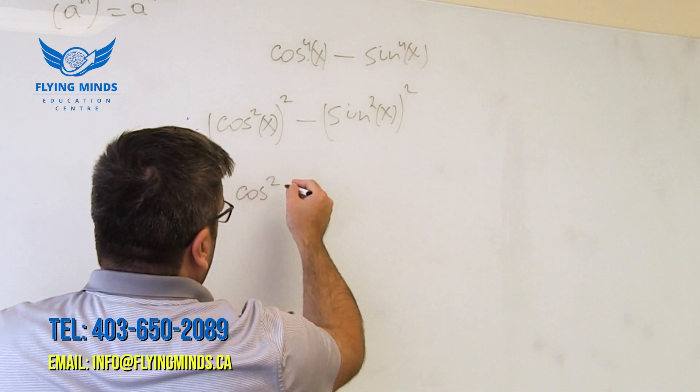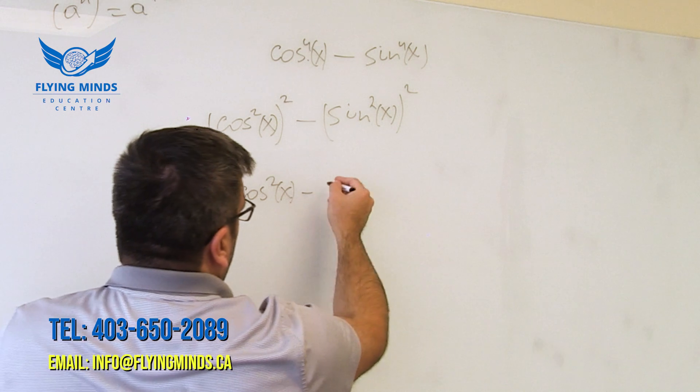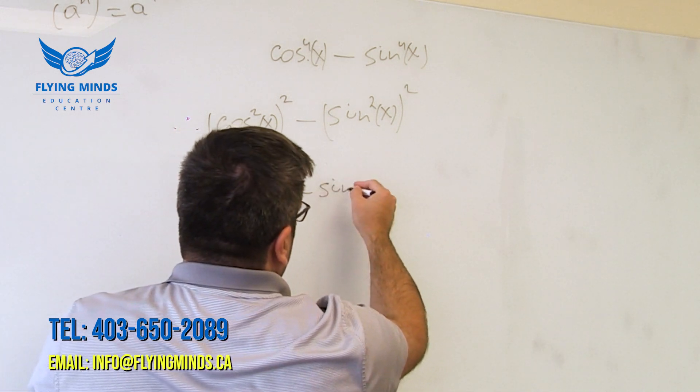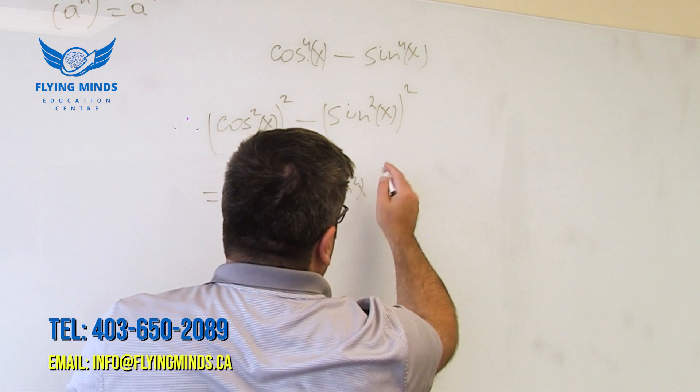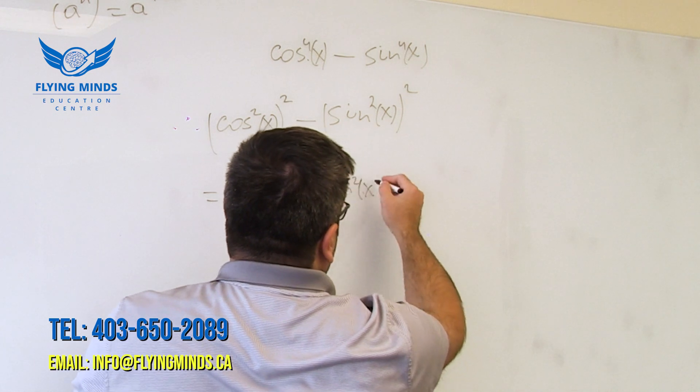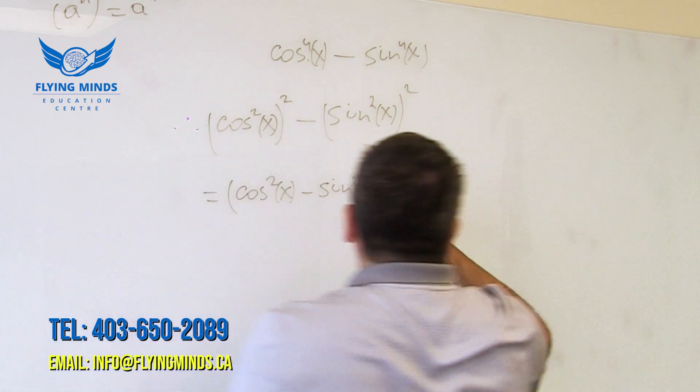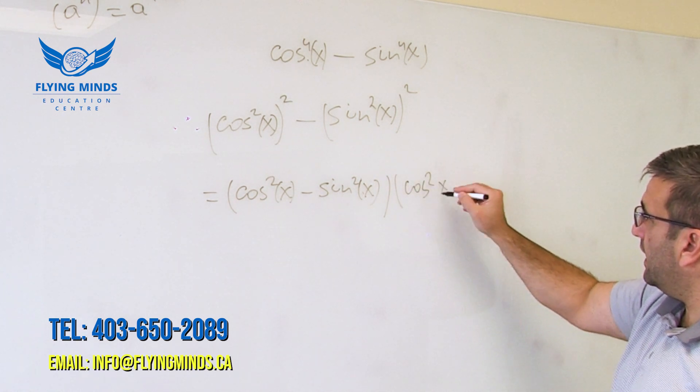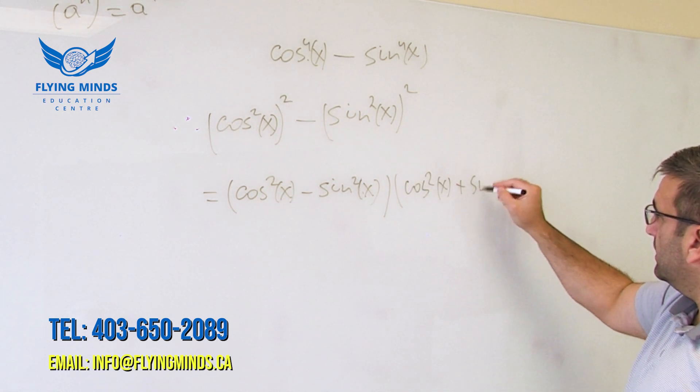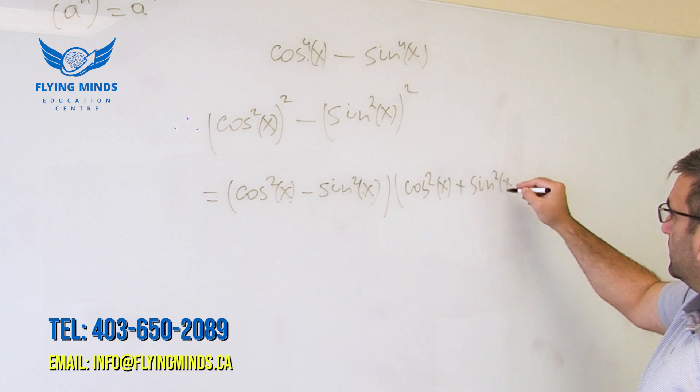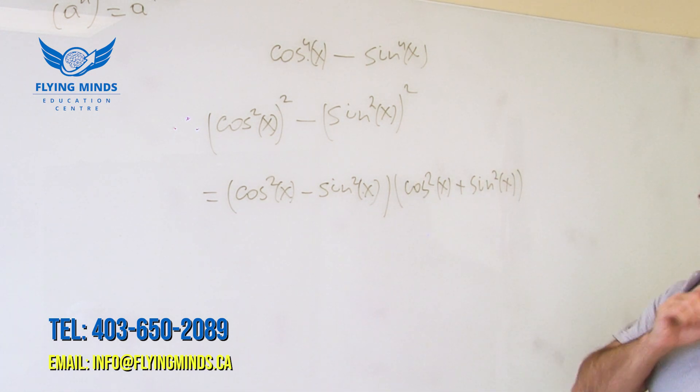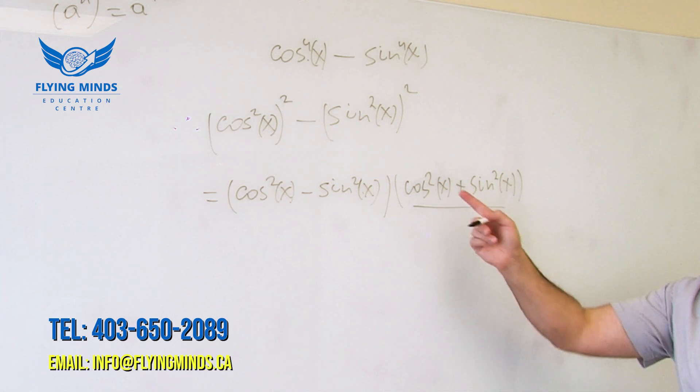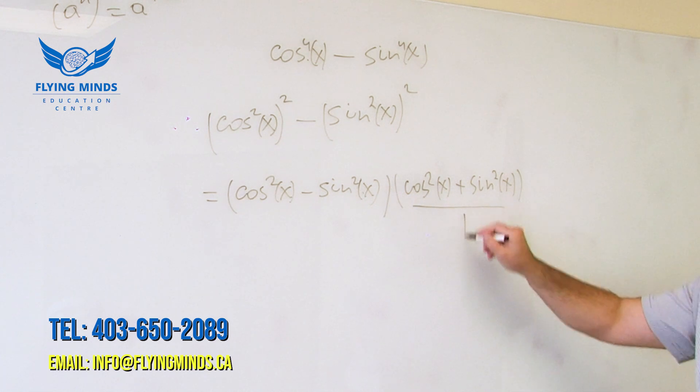So we can do this thing. Cosine squared x minus sine squared x times cosine squared x plus sine squared x. And then this bracket equals to cosine squared plus sine squared is 1. Right?